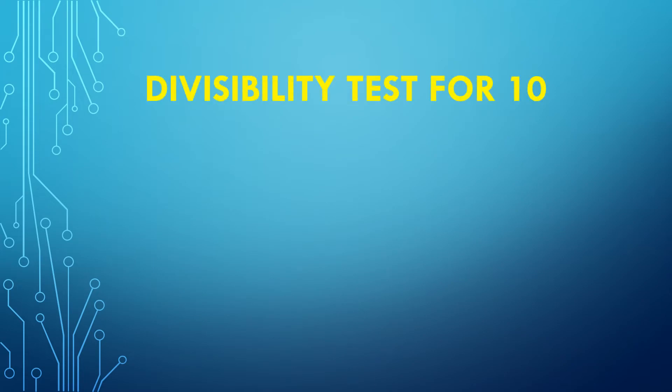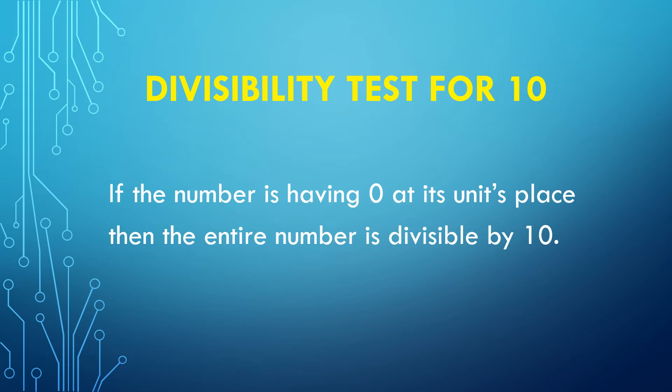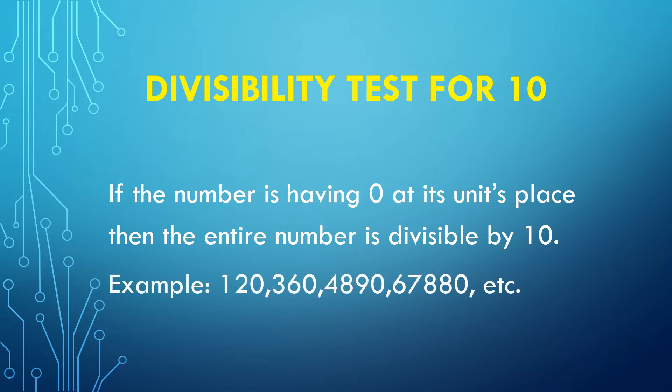Divisibility test for 10: if the number has 0 at its unit's place, then the entire number is divisible by 10. For example, 120 has 0 at its unit's place, so 120 is divisible by 10. 360 also has 0 at its unit's place, so the entire number is divisible by 10. 67,880 also has 0 at its unit's place, so the entire number is divisible by 10.